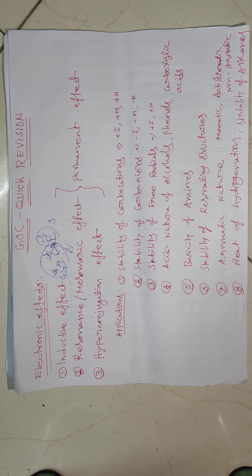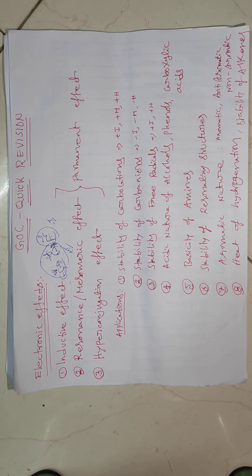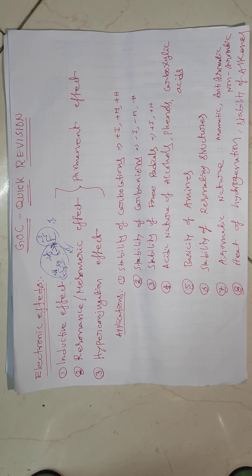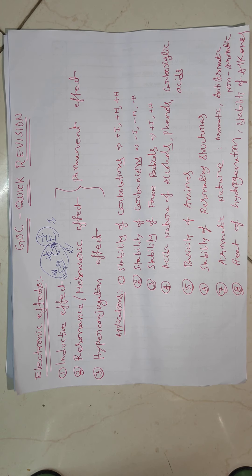Resonance or mesomeric effect is the delocalization of non-bonding electrons or pi electrons. It means there is a possibility of different resonating structures by change in position of pi electrons or non-bonding electrons, but not in the position of the nuclei — the atoms do not move. So resonance is the delocalization of non-bonding electrons or pi electrons.